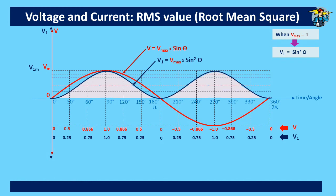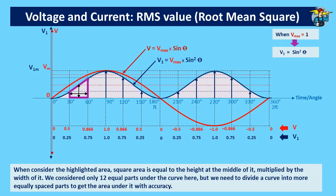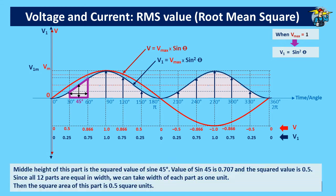Marked lines on the new curve divide its area into 12 parts, each part having the same width of 30 degree angle. When we consider the highlighted part, square area is equal to the height at the middle of it multiplied by the width. We consider 12 equal parts under the curve here, but we need to divide the curve into more equally spaced parts to get the area with accuracy. The middle height of this part is the squared value of sin 45°. The value of sin 45° is 0.707, and the squared value is 0.5.